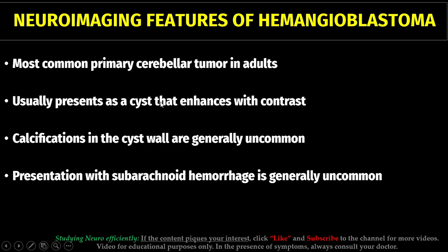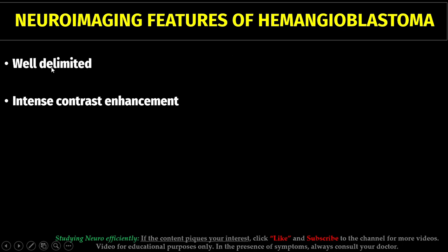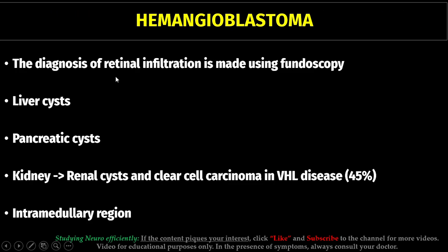In radiologic exams, hemangioblastoma usually presents as a cyst that is enhanced with contrast. Calcification and subarachnoid hemorrhage are generally uncommon. On neuroimaging, hemangioblastoma is generally a well-delimited tumor and shows intense contrast enhancement. We need to be aware that some patients can also present with retinal infiltration.